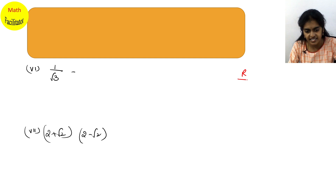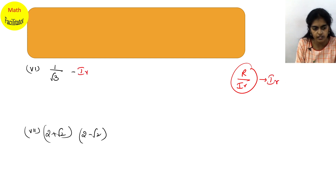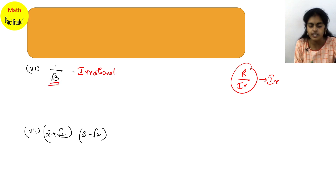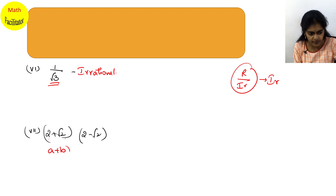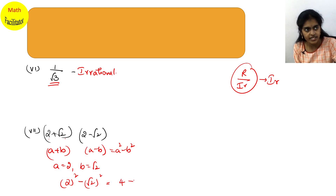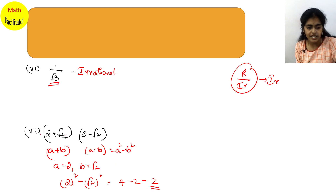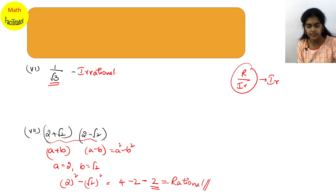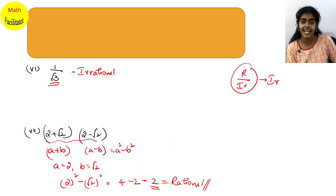Next: 1/√3. This is rational ÷ irrational, which is also irrational. So 1/√3 is an irrational number (the formal proof you will learn in Class 10). Finally: (2+√2)(2-√2). This is (a+b)(a-b) = a²-b² where a=2, b=√2. So 2² - (√2)² = 4 - 2 = 2. The result 2 is a rational number.